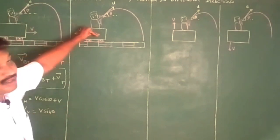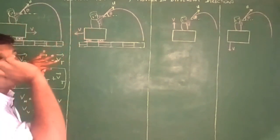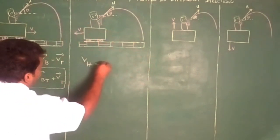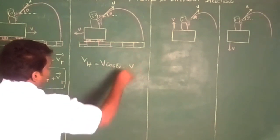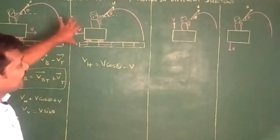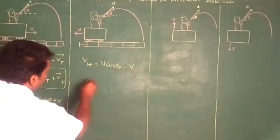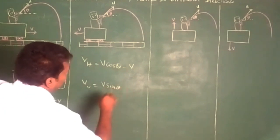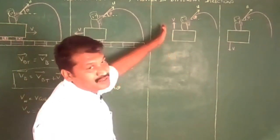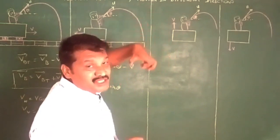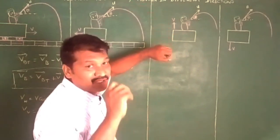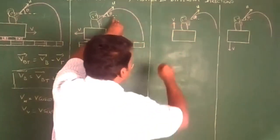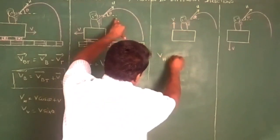In the next case, the trolley is moving in one direction but the ball is thrown in the opposite direction. So the horizontal component is v cosθ minus v, because it is opposite to the direction of the moving trolley. The vertical component remains the same, that is v sinθ.